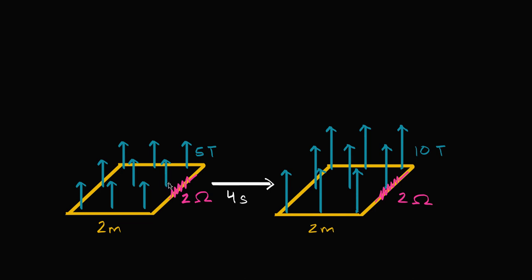What we're going to see happen is, over the next four seconds — and this is going to happen at a linear rate, a constant rate — we're going to see the magnetic field go from five teslas to 10 teslas. So it's going to double over those four seconds, and by doing so, we're going to have a change in flux.